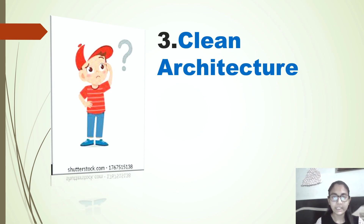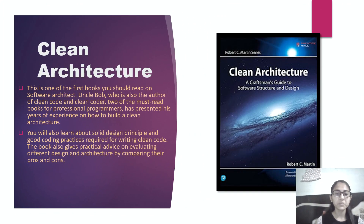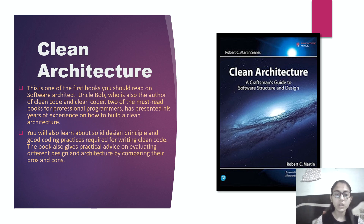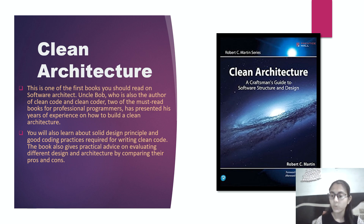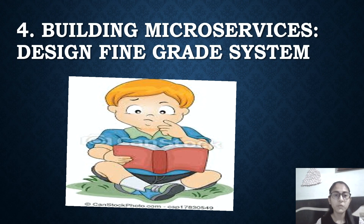The third on the list is 'Clean Architecture.' This is also one of the first books you should read on software architecture. Uncle Bob, who is also the author of 'Clean Code' and 'Clean Coder' — two of the most great books for professional programmers — has presented his years of experience on how to build clean architectures. In this book you will also learn about SOLID design principles and clean coding practices. This book also gives practical advice on evaluating different designs and architectures by comparing their pros and cons.